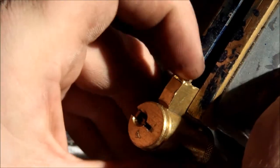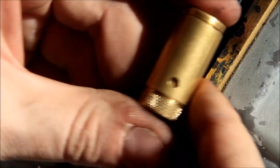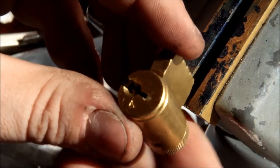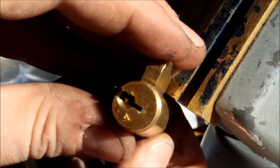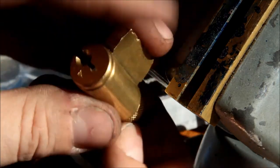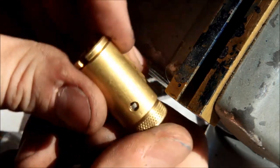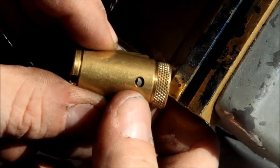There's a Schlage Everest lock. You can see the... Well, I'm going to bring it back to... There it is. Picked. Okay. See the little Everest sign on there. And you can see the detent is in there.